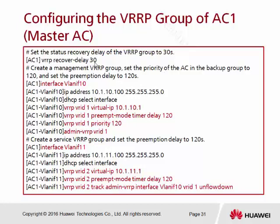Next, we're going to create the virtual interface. This virtual interface is interface VLAN 10. We use the command 'ip address 10.1.10.100' followed by the subnet mask — this is how we assign the IP address to the interface VLAN. Then we enable DHCP on this interface. This VLAN 10 belongs to the management VLAN, so it will be used by the AC and the AP.